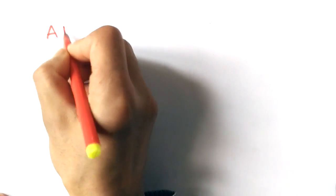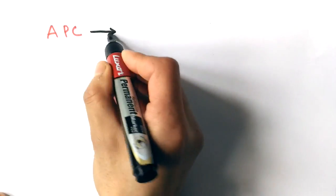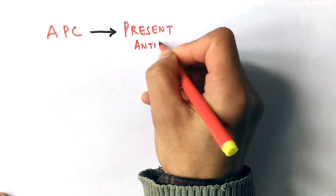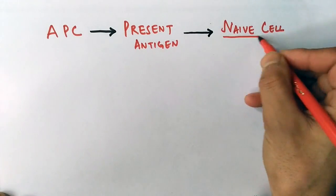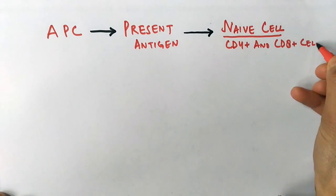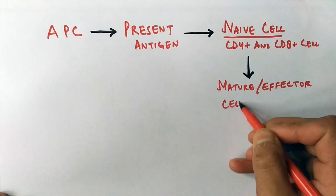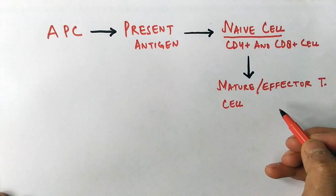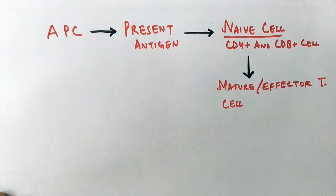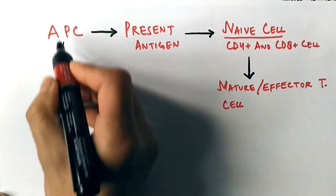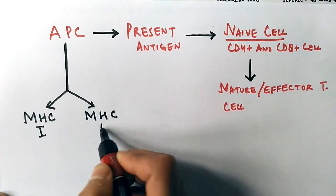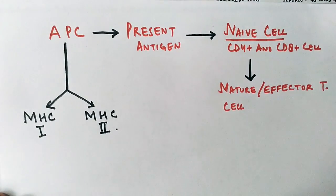Here we have an APC, antigen presenting cell, that has the capability to present antigen in the form of peptides towards a naive cell. Naive cells have CD4 positive and CD8 positive, and these two cells get eventually activated into effector cells after getting respective signals. APC presents antigen on MHC1 or MHC2 molecules to their specific cells.